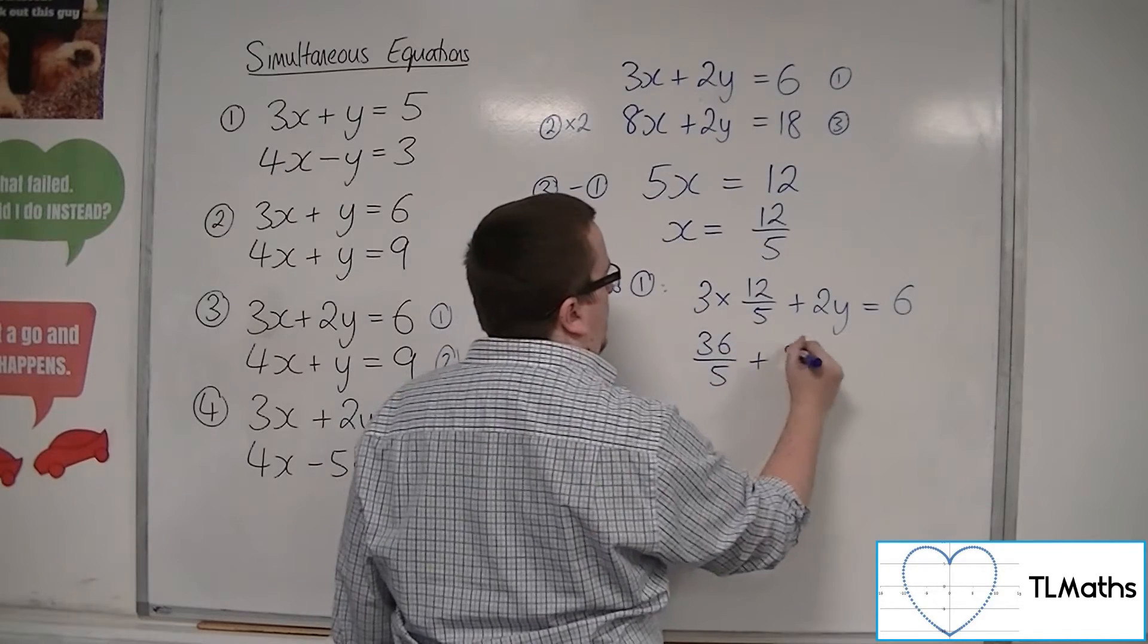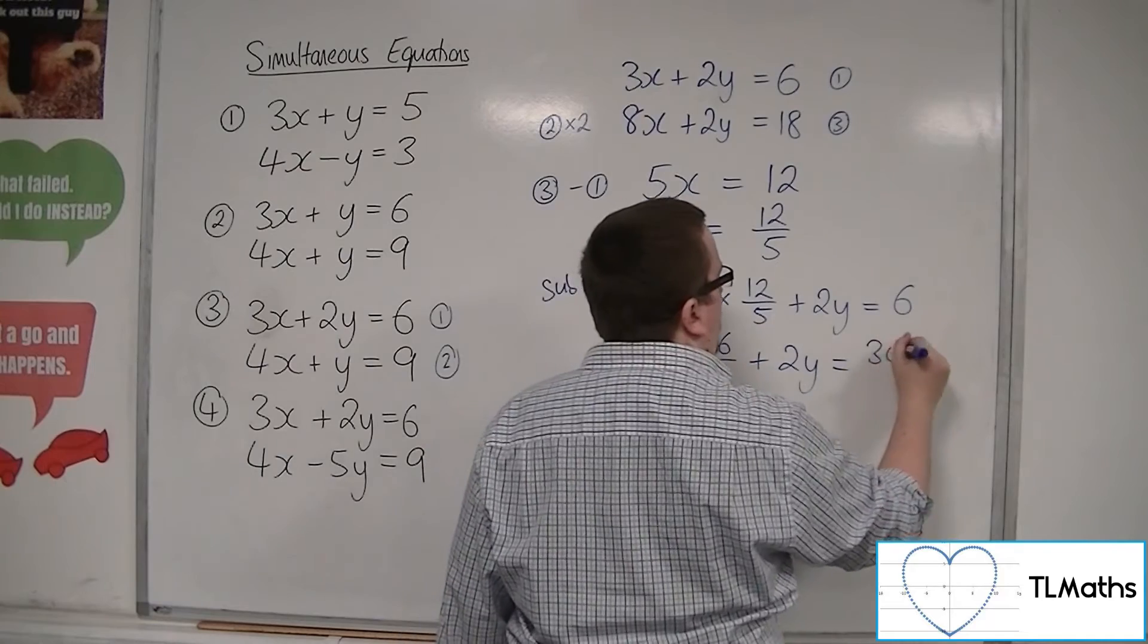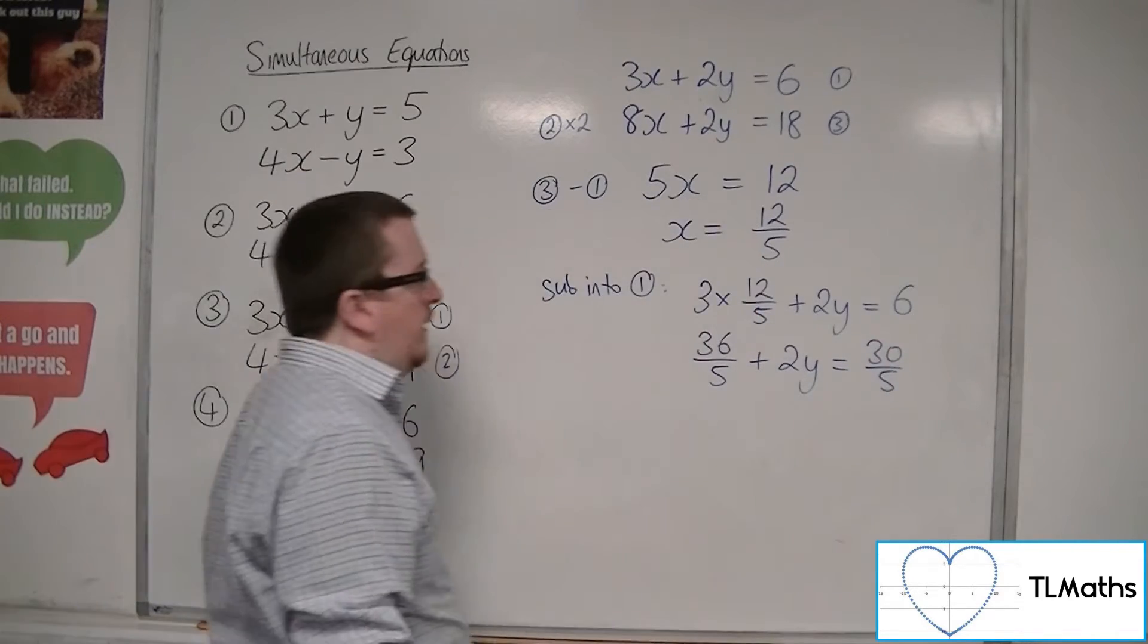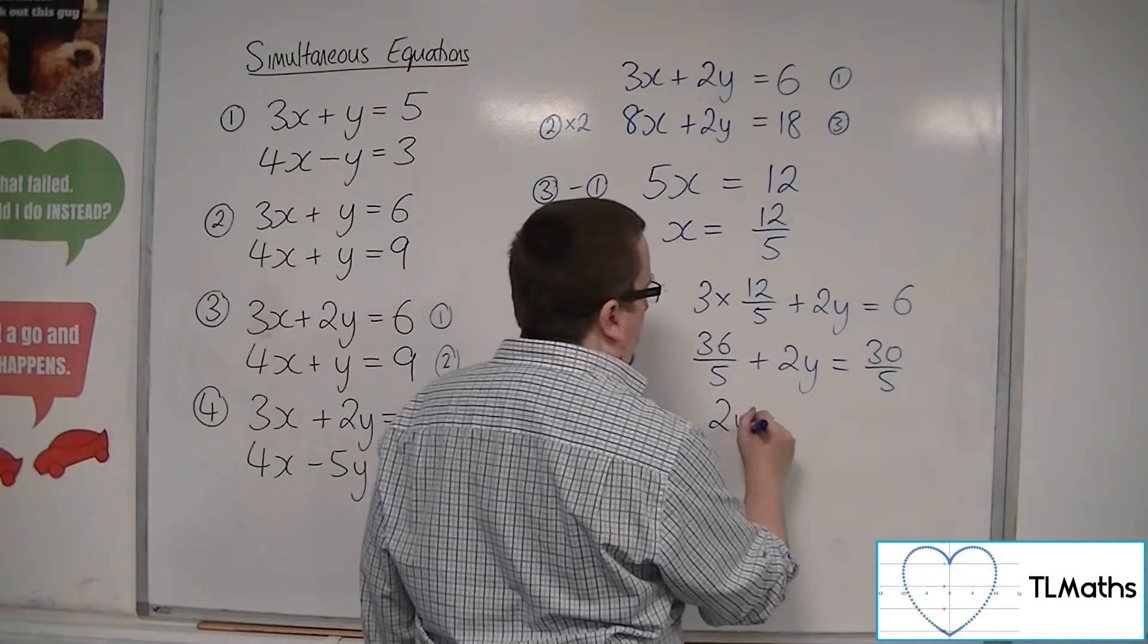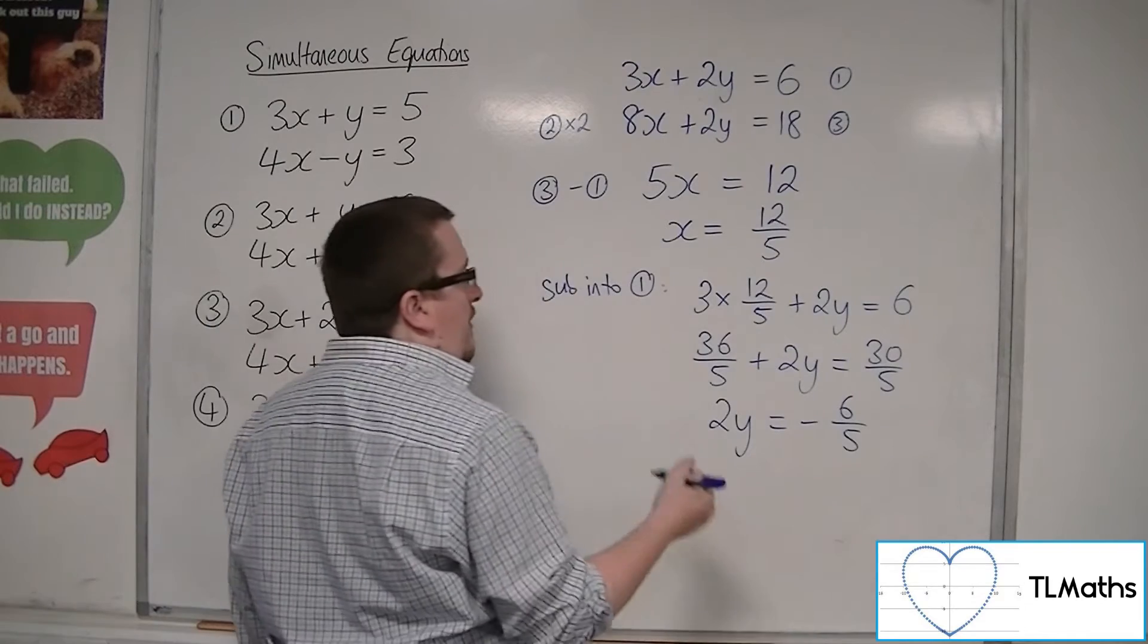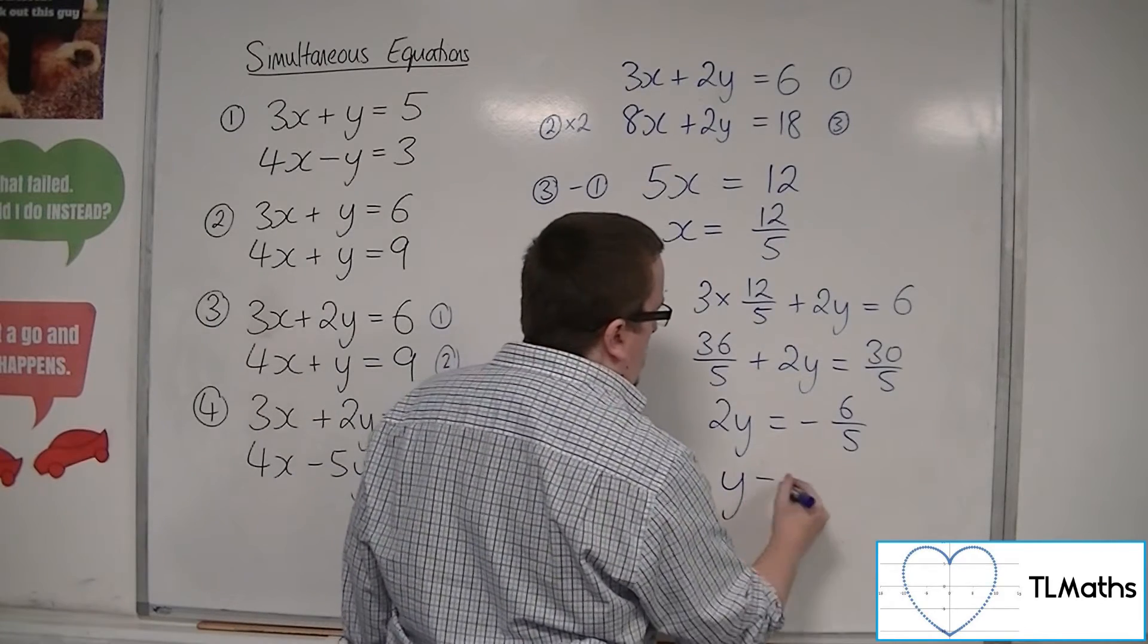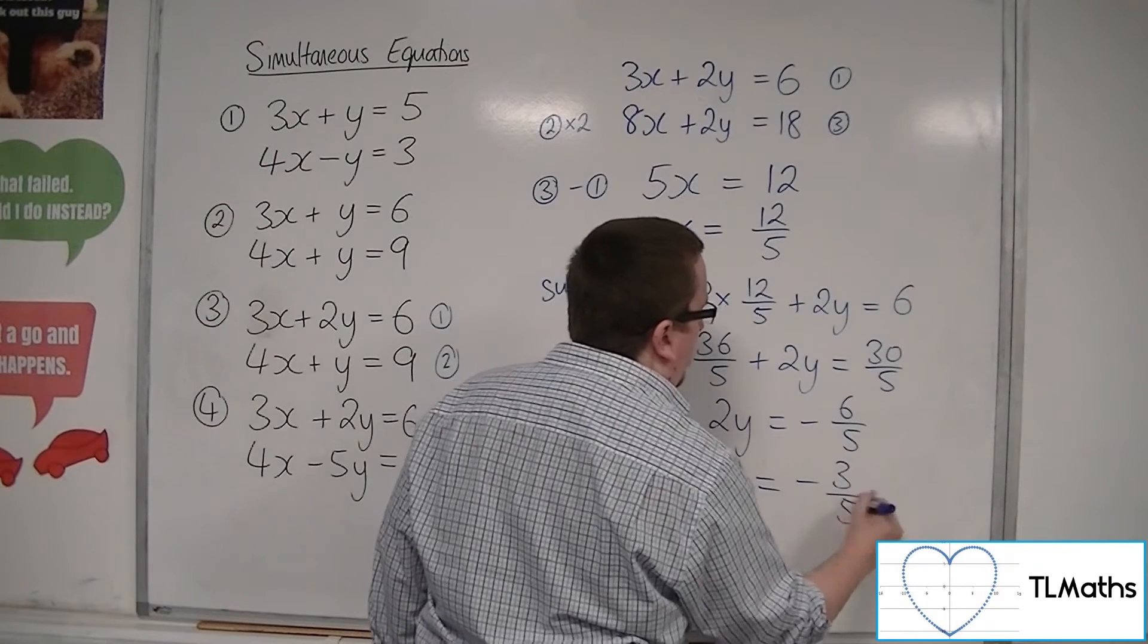So 3 times 12 is 36, so 36 fifths plus 2y. And 6 can be written as 30 over 5. So then I can subtract the 36 fifths from both sides. So 2y is equal to minus 6 fifths. And then divide both sides by 2. So y is equal to minus 3 fifths.